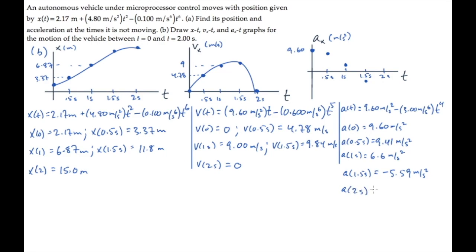And at t equals 2 seconds, the acceleration is negative 38.4 meters per second squared. That's a very large negative value, so it's down here among the numbers somewhere. And a smooth curve through those points looks something like this. So that's part B, the plots for position, velocity, and acceleration.